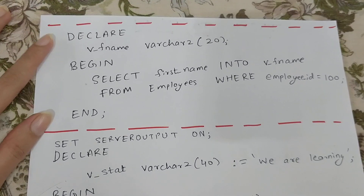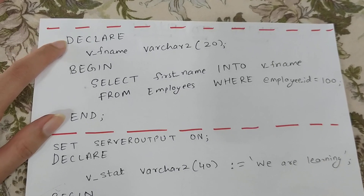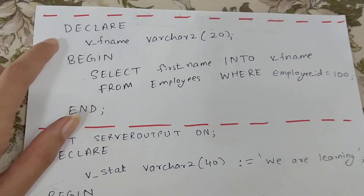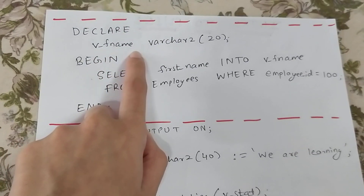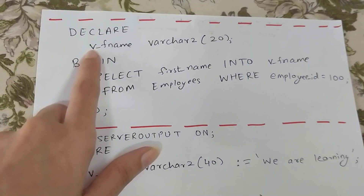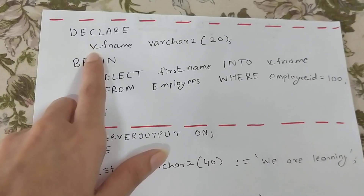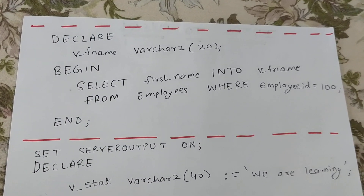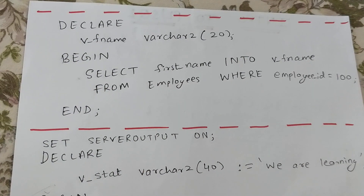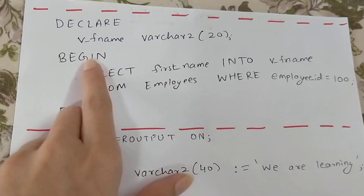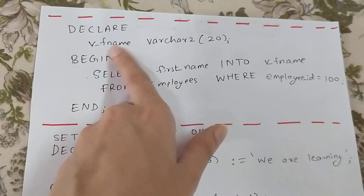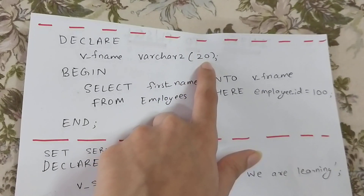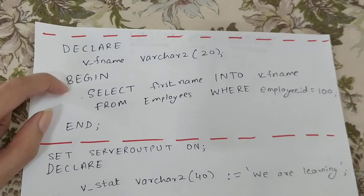Now we will see three basic examples of PL/SQL. The first one: in DECLARE we declare a variable. By convention, variable names are prefixed with 'v_', so we write v_fname. The data type of v_fname is VARCHAR2 with size 20. This is how we declare a variable in PL/SQL, followed by BEGIN and END.